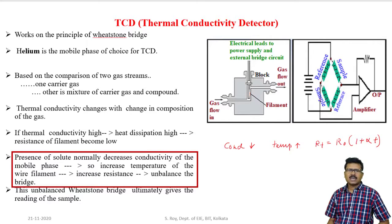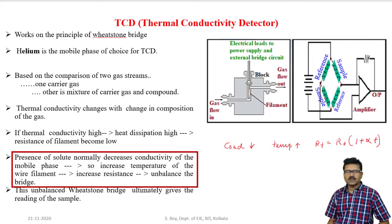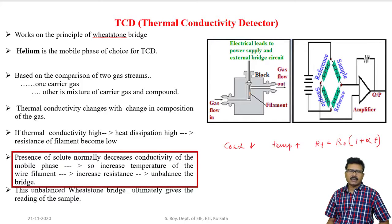If the compound concentration is higher, the Wheatstone bridge will provide higher output. If the concentration of the sample is lower, the Wheatstone bridge will provide lower output. The amplifier output is the ultimate indication of the unknown sample to be tested.